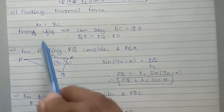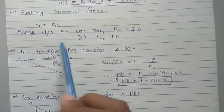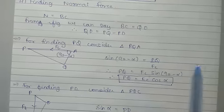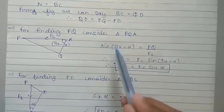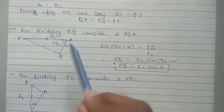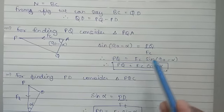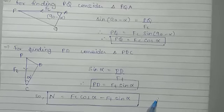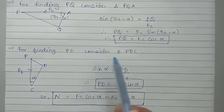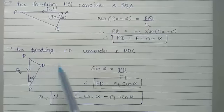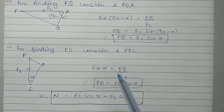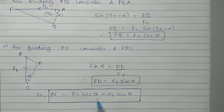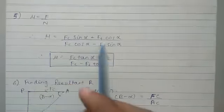Next, finding normal force N. Normal is equal to BC. From the figure we can say BC is equal to QD, and QD is equal to PQ minus PD. For finding PQ, consider triangle PQA. sin(90 minus alpha) is equal to PQ upon Fc, so PQ is equal to Ft cos alpha. Therefore N is equal to Fc cos alpha minus Ft sin alpha.